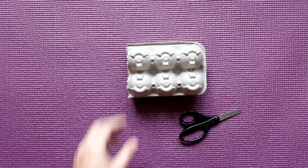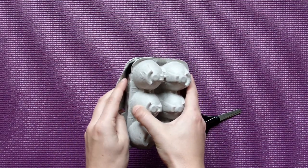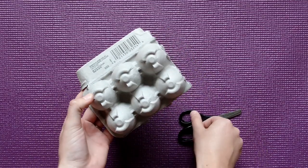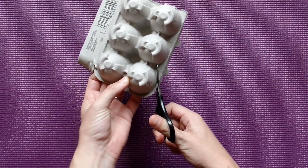First we're going to take our egg carton and our scissors and we're just gonna cut out one of these little circles. This is going to be the top shell of our turtle or the carapace.